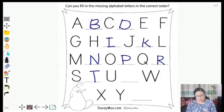U. Then what letter comes after U? V, W, X, Y. Now what comes after Y? Z.